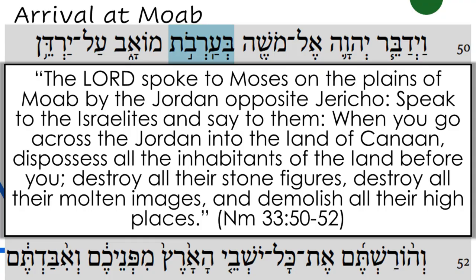The entire scene concludes on the plains of Moab: 'When you go across the Jordan into the land of Canaan, dispossess all the inhabitants of the land before you. Destroy all their stone figures, destroy all their molten images, and demolish all their high places,' because they can be a temptation. This sets the scene for the Book of Deuteronomy, which will be our focus in our next class. Until then, read well and pray well.